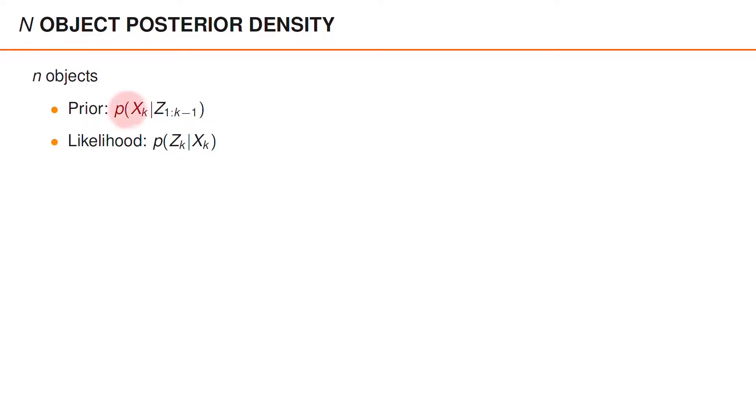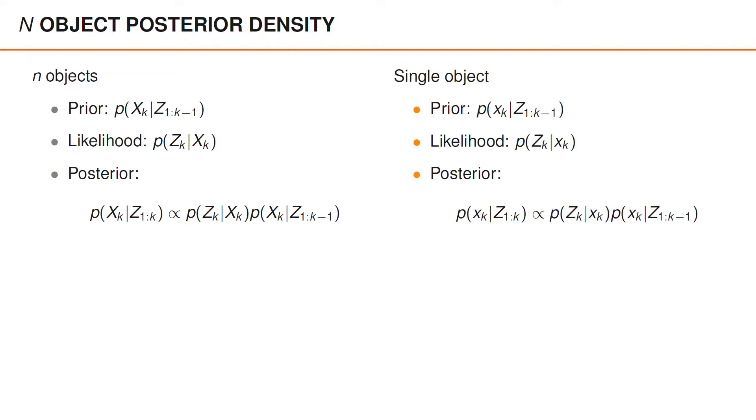To get the posterior density, we start with a prior for n-objects and the measurement likelihood. The base posterior is proportional to the multiplication of the likelihood and the prior, and what we want to arrive at is an expression for what this base posterior is. And we have already done this for single-object tracking.